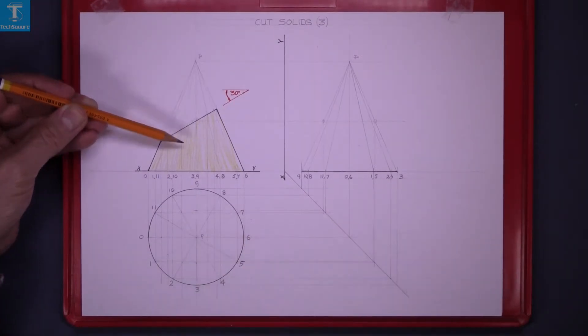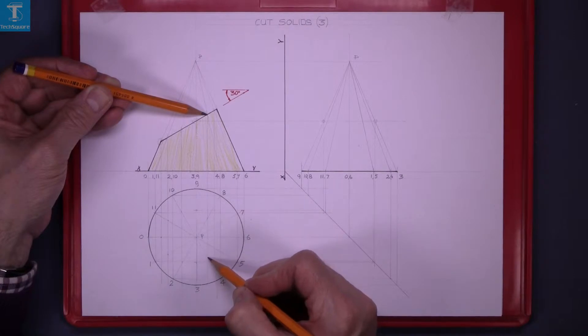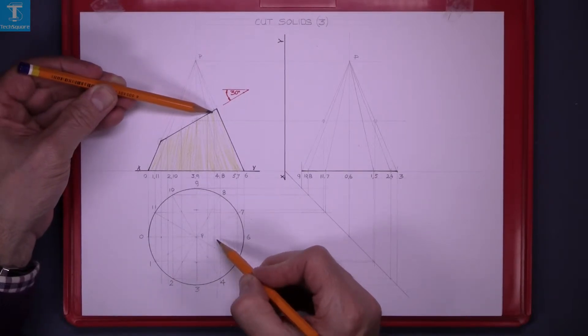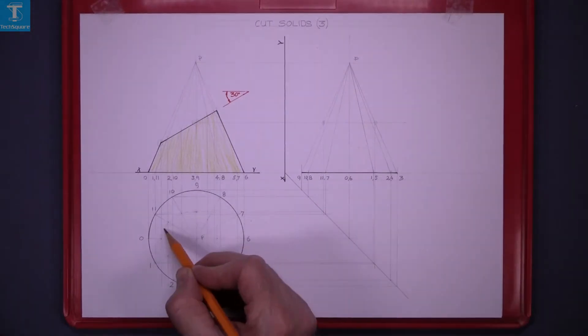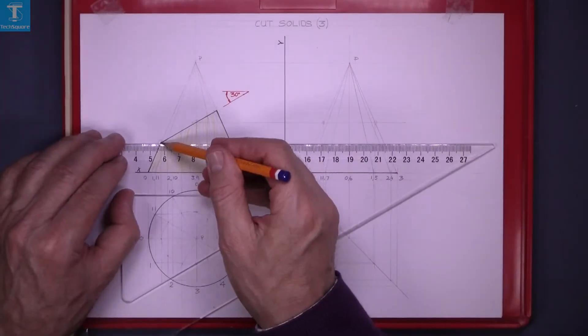The center ones we have already from the end view, that's those two, and then the last one. Just line in those lightly and that's what the section will look like in the plan.